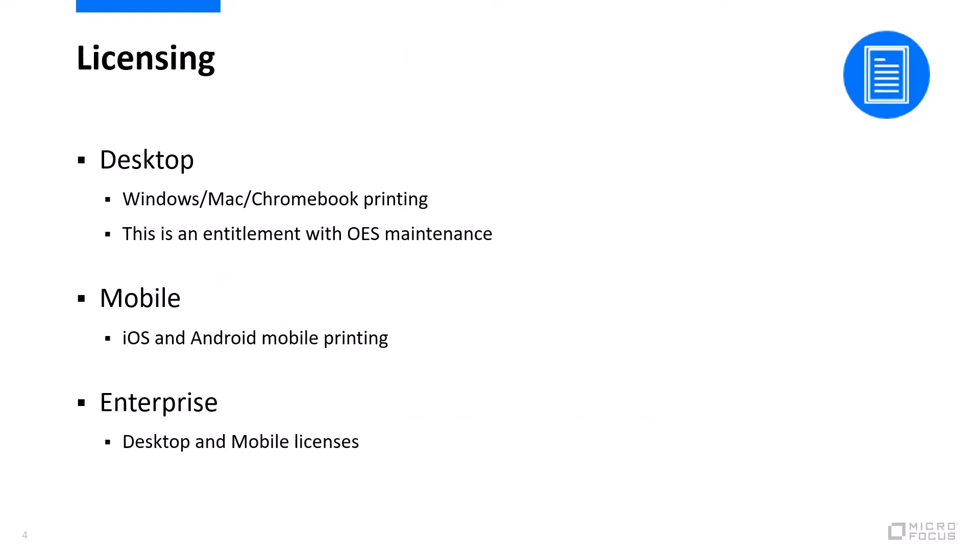Talking about licenses, we have a number of different licenses available for iPrint. You've got desktop licensing, which is for Windows, Mac, and we have a Chromebook version as well. We've got mobile licensing with iOS and Android, and you can just pull down the app from the relevant store to install on your device. And we do have enterprise licensing, which is effectively both desktop and mobile licensing as one license.